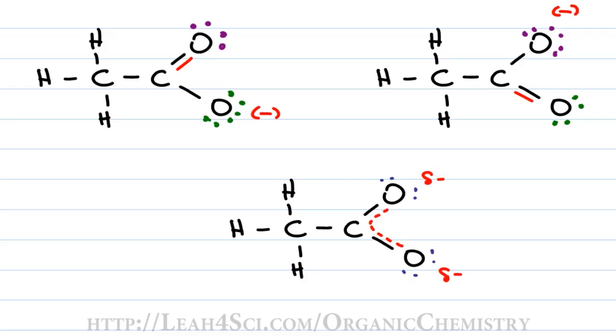This is considered the resonance hybrid which is simply the in-between. Now, the idea with resonance is that in reality, these electrons are moving back and forth but they're moving so quickly, it's hard to show this with pen and paper.